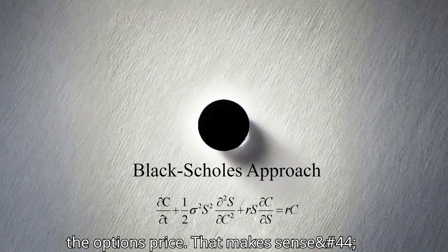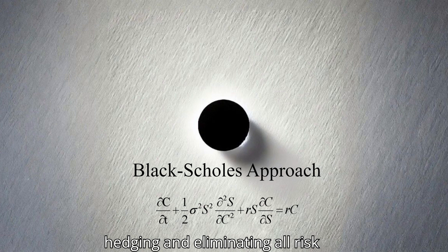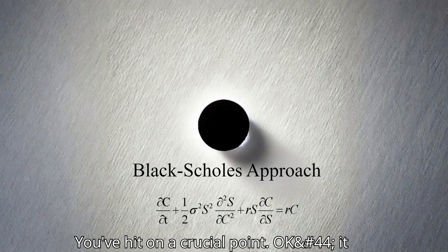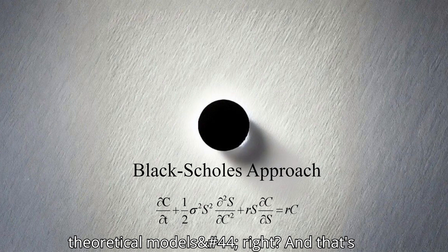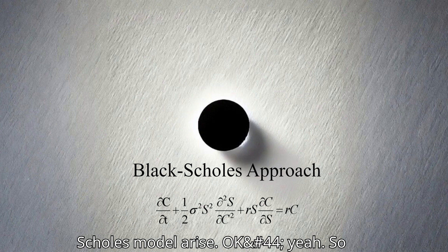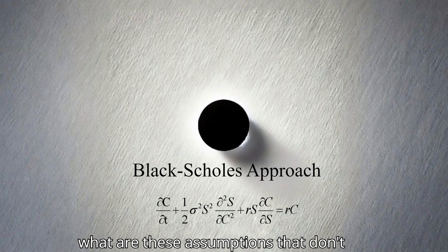But this assumption of perfect hedging and eliminating all risk sounds a bit idealistic, doesn't it? You've hit on a crucial point. It leads us to some of the limitations of the Black-Scholes model. The real world rarely conforms perfectly to theoretical models, and that's where some of the criticisms of the Black-Scholes model arise. So what are these assumptions that don't always align with reality?